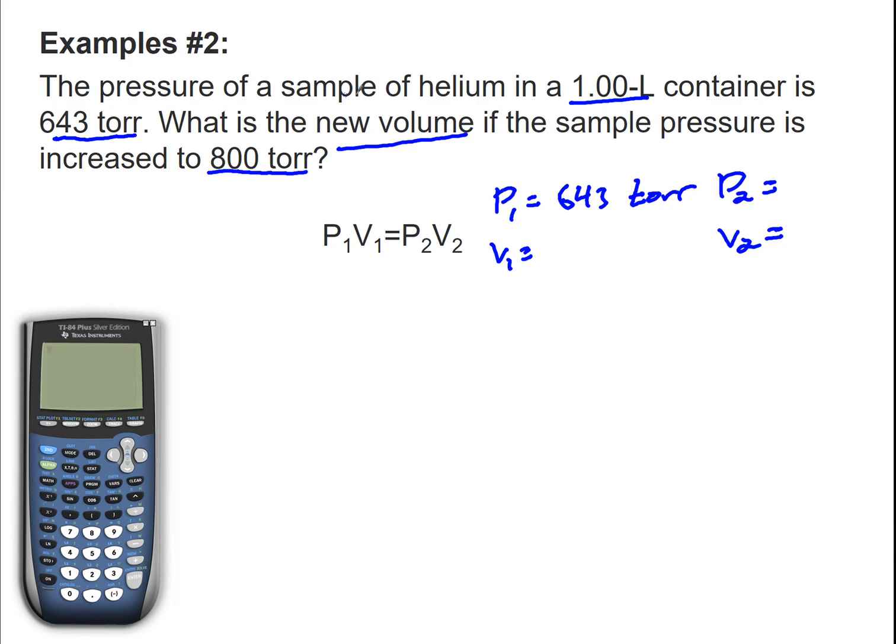My V1 is going to be 1.0 liters. My P2 is 800 torr, and we're looking for a new volume. My pressures are both in torr, so that's good, didn't have to convert anything. My volume is in liters, that means my answer will be in liters.